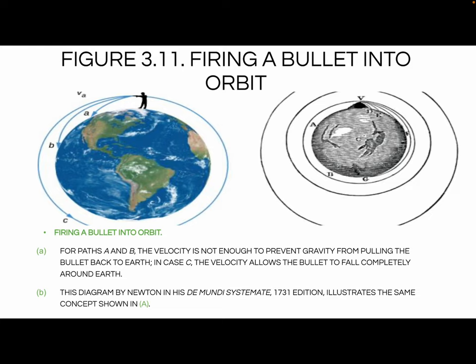For path A and B, the velocity is not enough to prevent gravity from pulling the bullet back to Earth. In case C, the velocity allows the bullet to fall completely around the Earth. Basically, how fast something is moving also affects gravity's influence on it — going really slowly, it falls down quickly like velocity A. Adding more velocity gets it to B. It would have to be a very high velocity to get it to go all the way around Earth. Newton's diagram in his book shows the same concept: without enough velocity, it will not orbit, but with more velocity, an object will go around in an orbit.